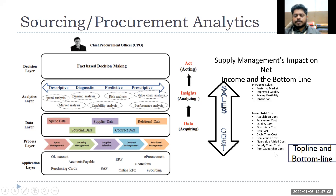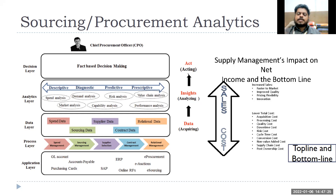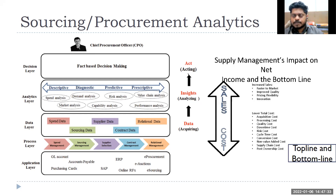There is also overall supply chain logistics cost and post-ownership cost. Once a product is assembled, ideally it should go to the customer. If it is stored in the warehouse or plant, that is a post-ownership cost. So there are many ways to reduce cost and a few ways to improve sales or revenue. Supply chain and sourcing analytics can help both in increasing top line and bottom line.